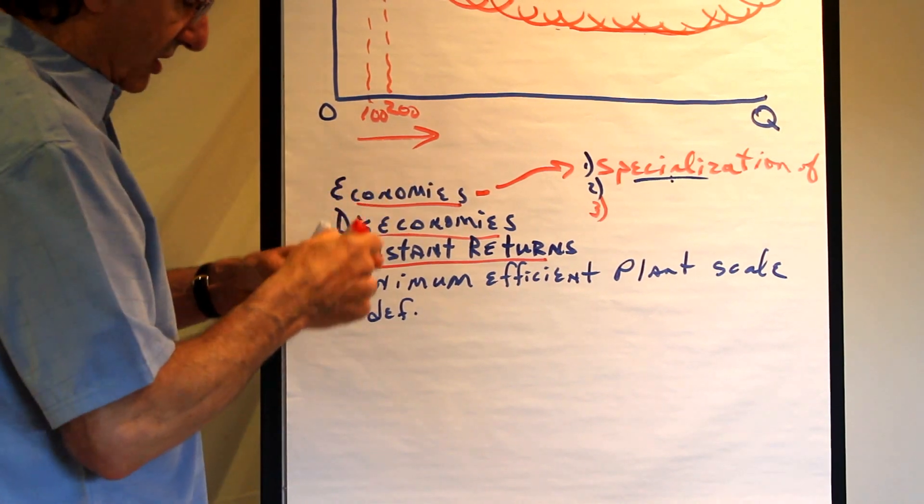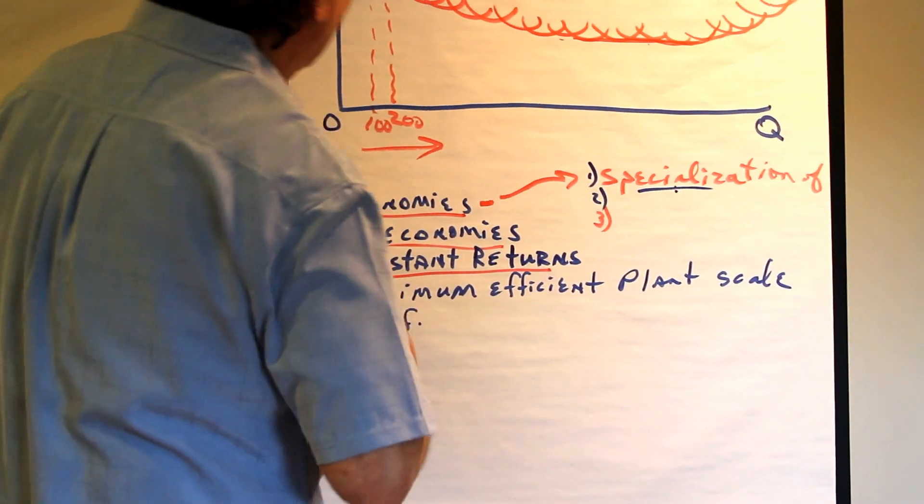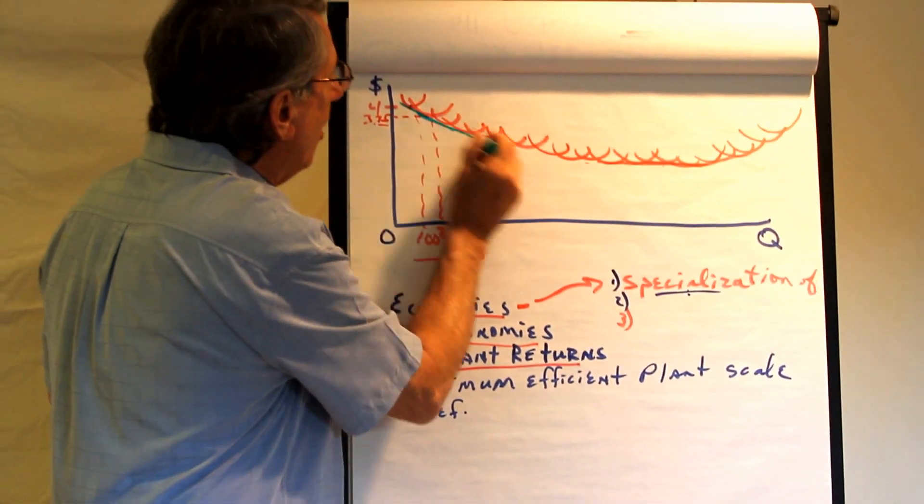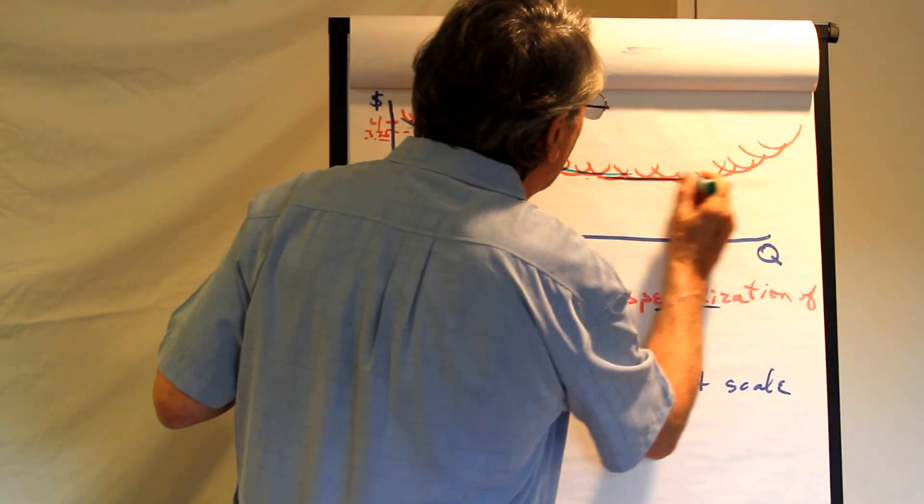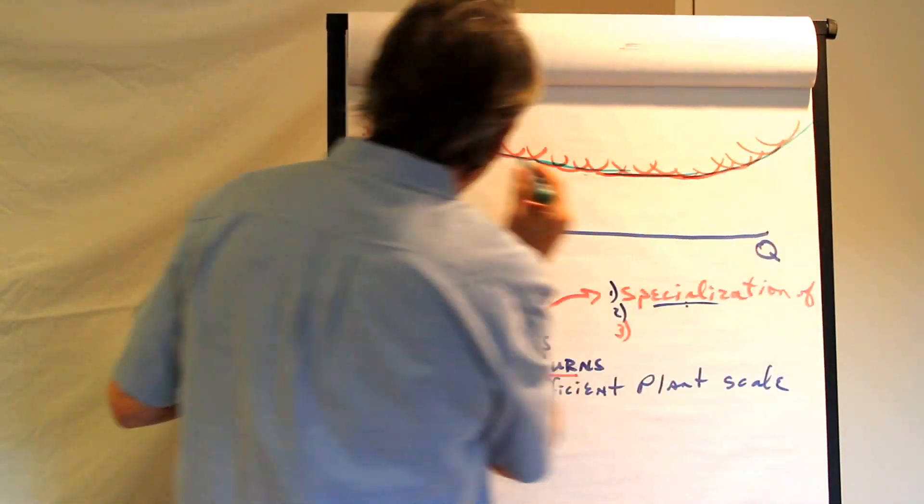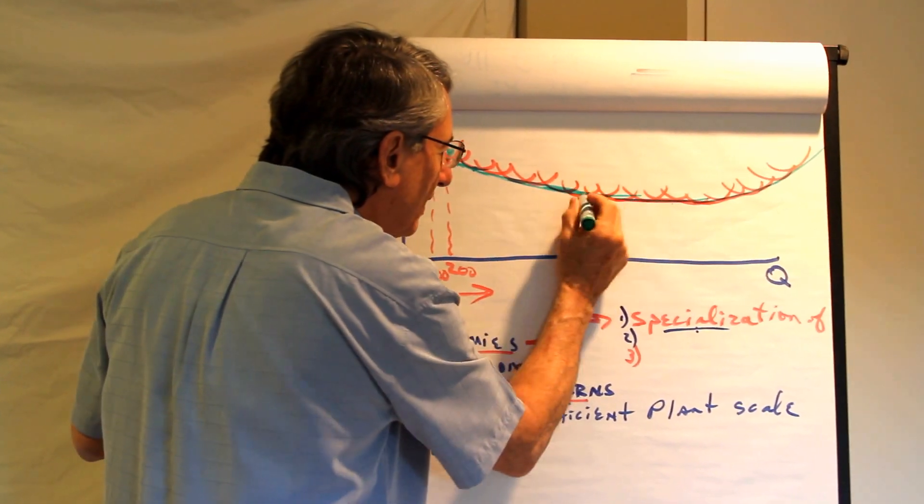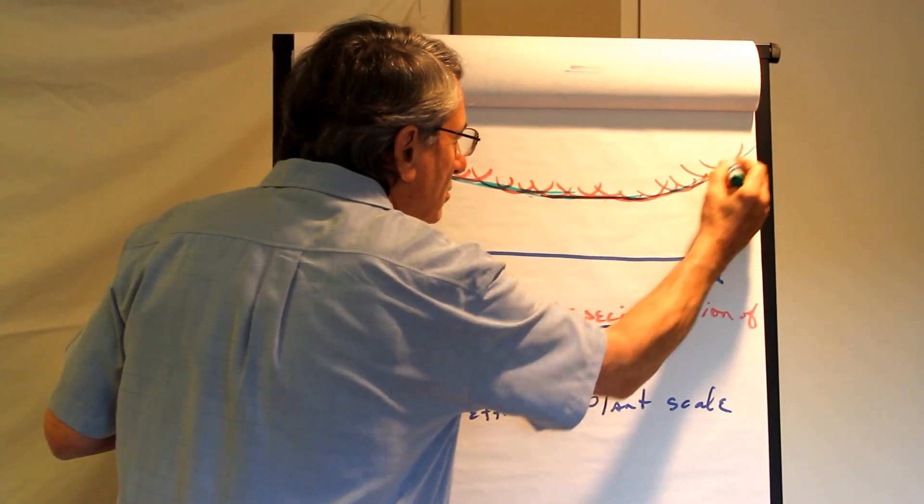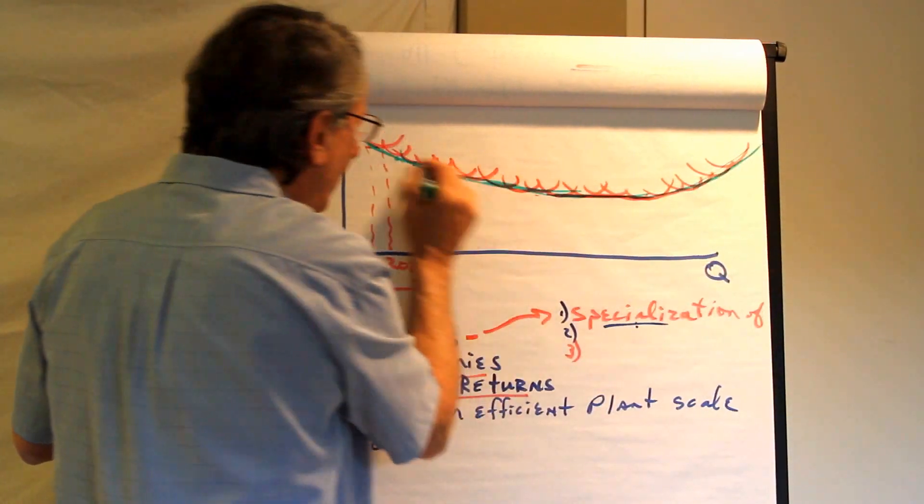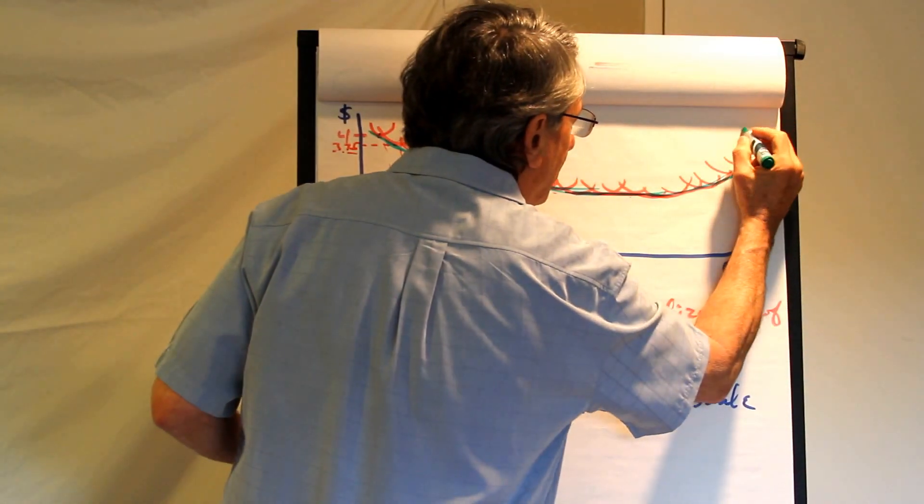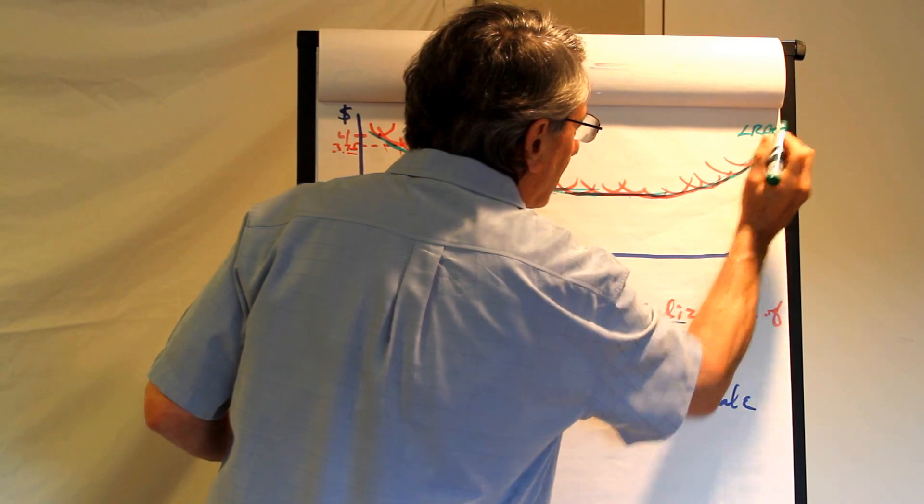So that's economies of scale, diseconomies of scale and constant returns to scale. And the long run average cost curve is what is known as the envelope curve of all short run scale possibilities. It's really the outside tangency points of every possible short run scale of plant. So this green envelope curve, the outside tangency points, is the long run average cost curve.